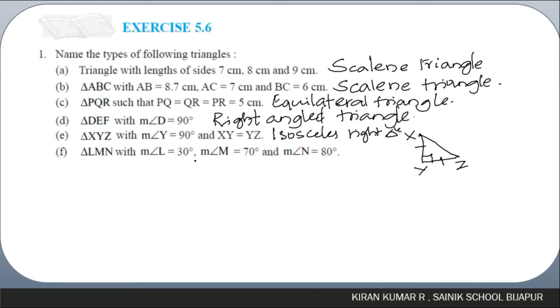Triangle LMN where the measures of angles L, M, and N are all less than 90 degrees — this is an acute-angled triangle.